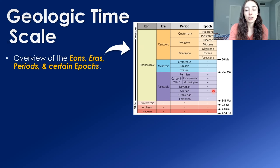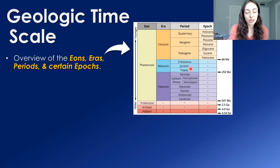These eras are broken out into major periods. The periods in the Paleozoic include the Cambrian, Ordovician, Silurian, Devonian, Carboniferous, and Permian. The Carboniferous is sometimes broken into the Mississippian and Pennsylvanian sub-periods. The Mesozoic contains the Triassic, Jurassic, and Cretaceous, and the Cenozoic contains the Paleogene, Neogene, and Quaternary.